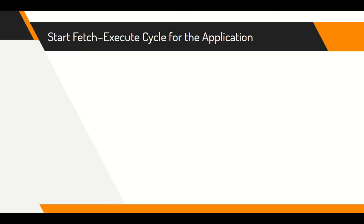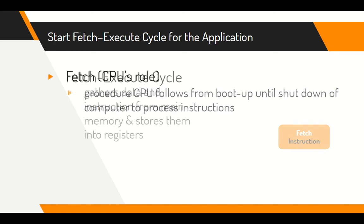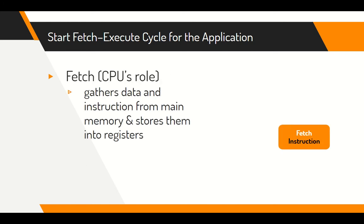To understand the relationship between software and hardware, the hardware's role during the fetch-execute cycle must first be identified. The fetch-execute cycle is a procedure the CPU follows from boot up until the shutdown of a computer in order to process instructions. During the first step, fetch, the CPU's role is to gather data and instructions from the main memory and to store them into its own internal memory areas or registers.